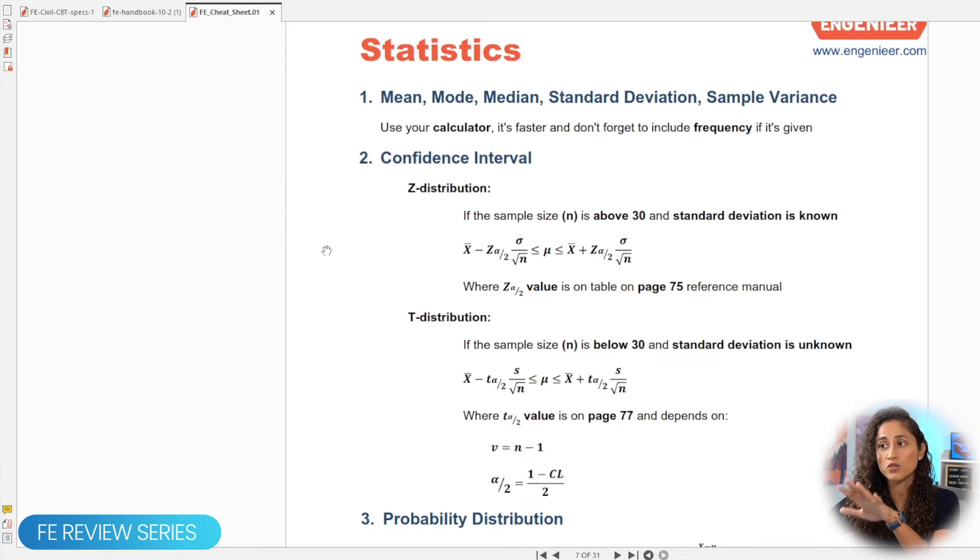So now, let's take a look at what we have here. We have confidence interval and we have a little bit of concepts on the Z and the T distribution. So for the Z distribution, we can use it when the sample size, which is N, is above 30 and also when we have the standard deviation. And the T distribution, we use it when the sample size is below 30 and the standard deviation is unknown.